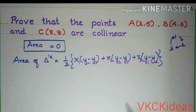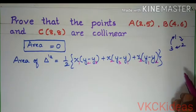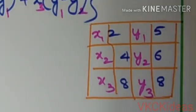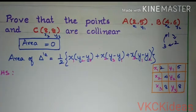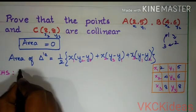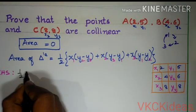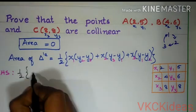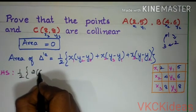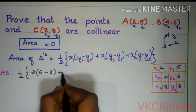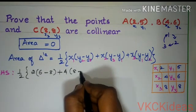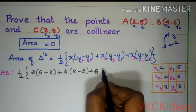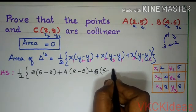Now, we will write the data in the given format. We will take only the LHS and substitute the values of x1, y1 and so on. So, it is half into x1 is 2, y2 is 6, y3 is 8, plus x2 is 4, y3 is 8, y1 is 5, plus x3 is 8, y1 is 5, y2 is 6.